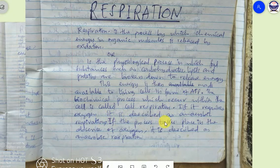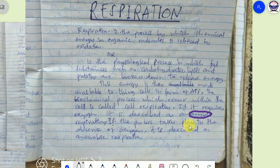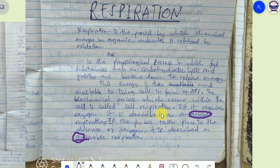If the process requires oxygen, it is described as aerobic respiration. If the process takes place in the absence of oxygen, it is described as anaerobic. So anaerobic means respiration takes place in the absence of oxygen, and aerobic means respiration takes place in the presence of oxygen.